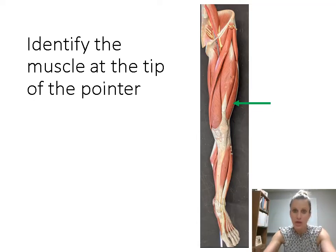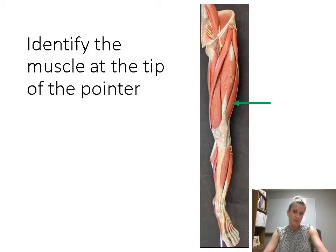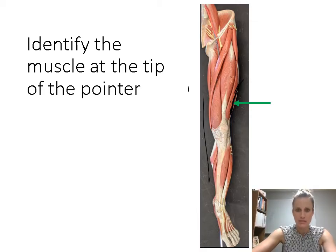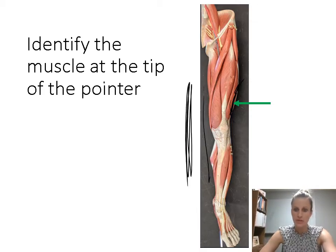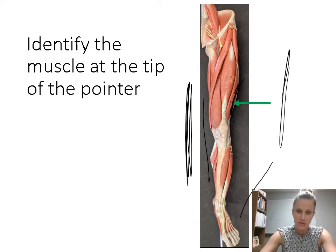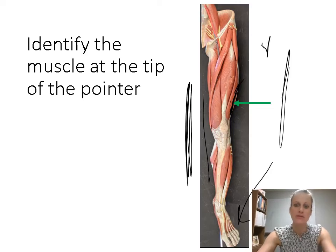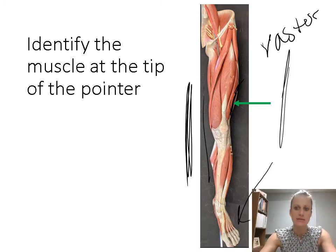This is referring to one of the quadriceps muscles — the one on the lateral side of the thigh. Remember the inside of the thigh over here is medial. This is on the outside: look at the foot, the pinky side — that's the outside, the lateral side. So this muscle is the vastus lateralis.